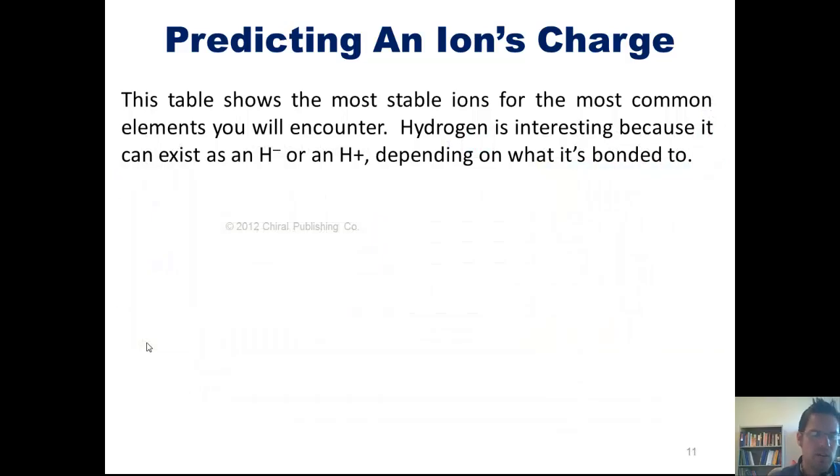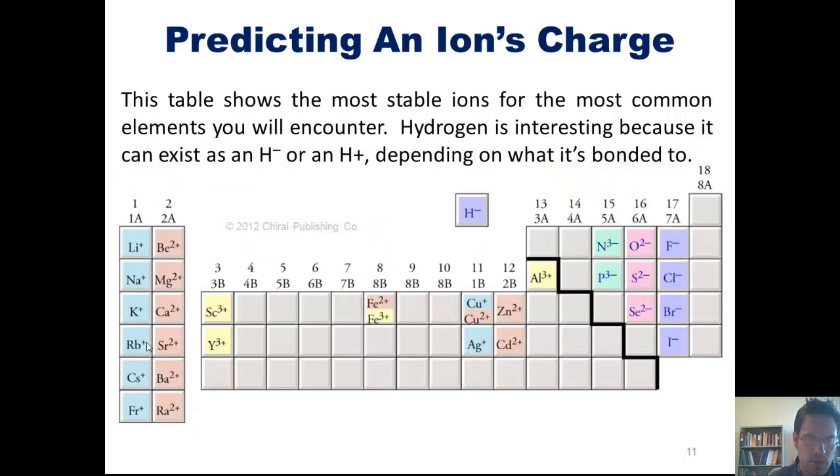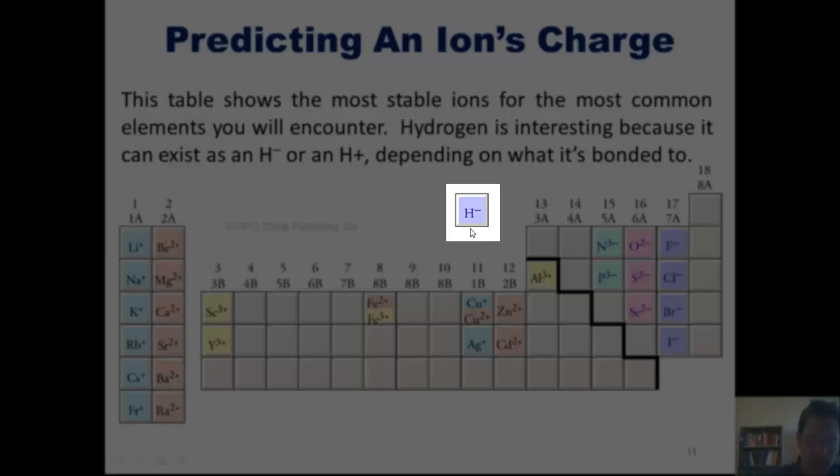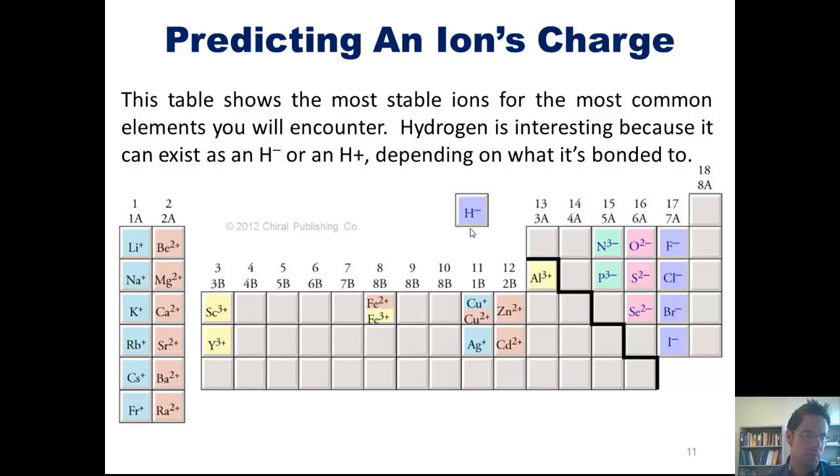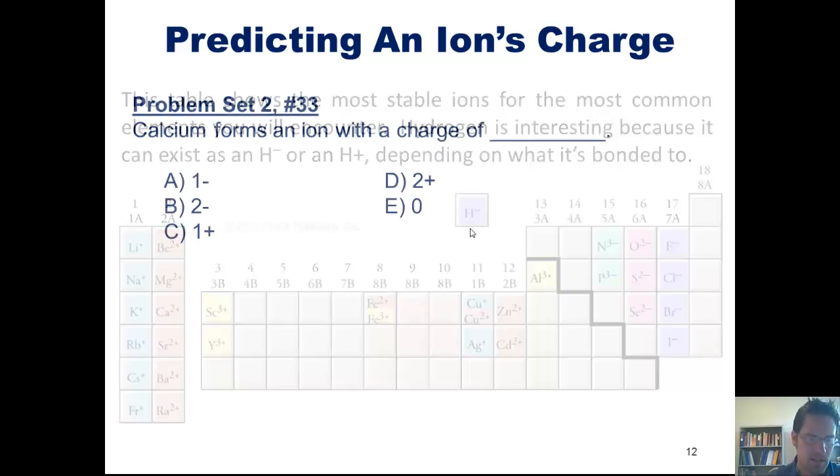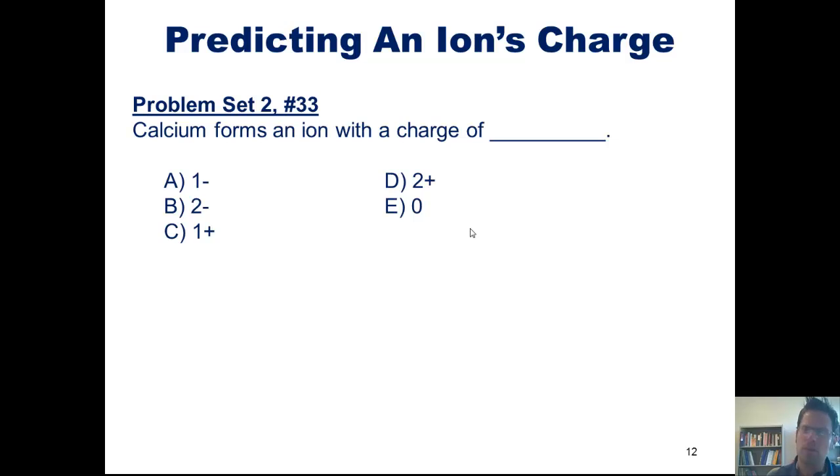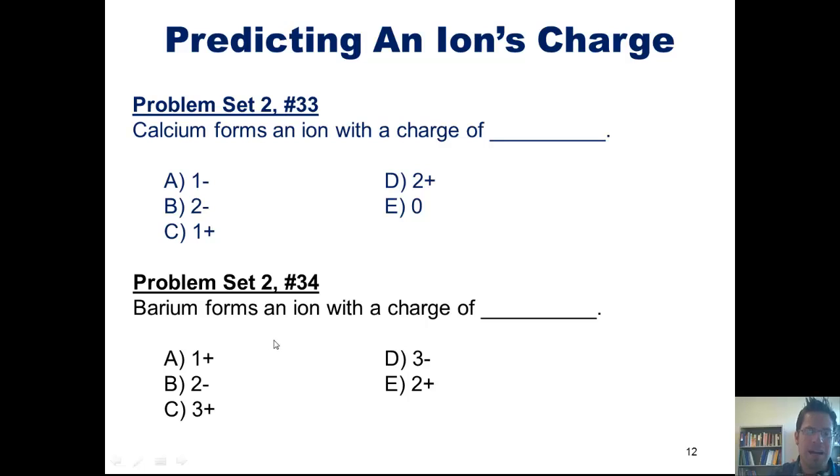This fact is encapsulated very well by this table, which shows the most stable ions for the most common elements you will encounter. Hydrogen, which is shown over here, is interesting because it can exist either as an H minus or an H plus, depending on what it's bonded to. Which brings us to these beautiful problems, which I think you should be able to do on your own. The first one says, calcium forms an ion with a charge of what? The next one says, barium forms an ion with a charge of what?